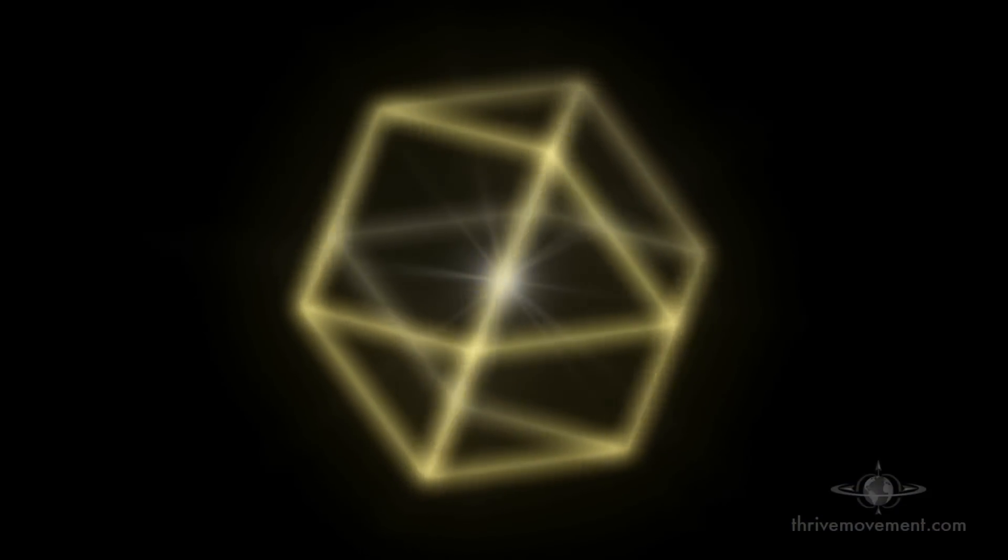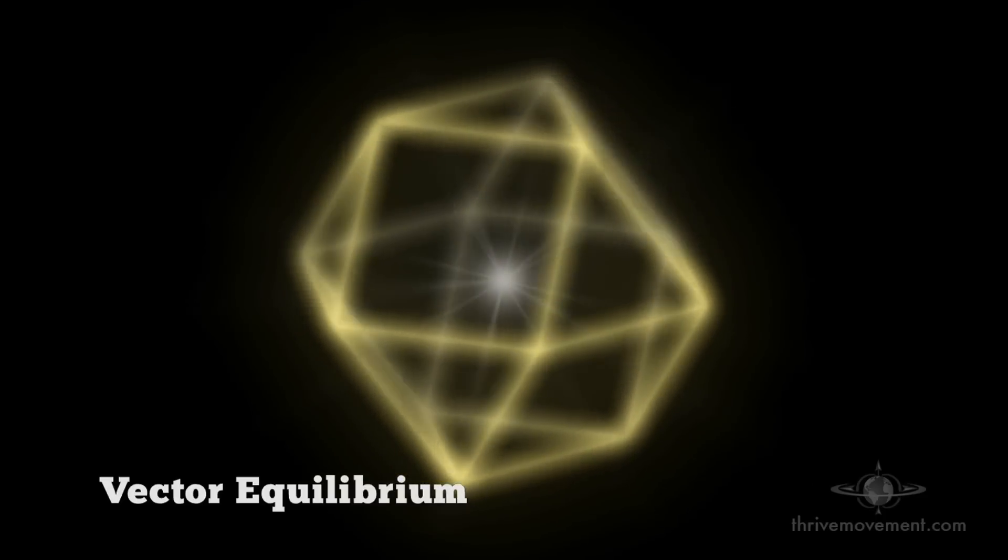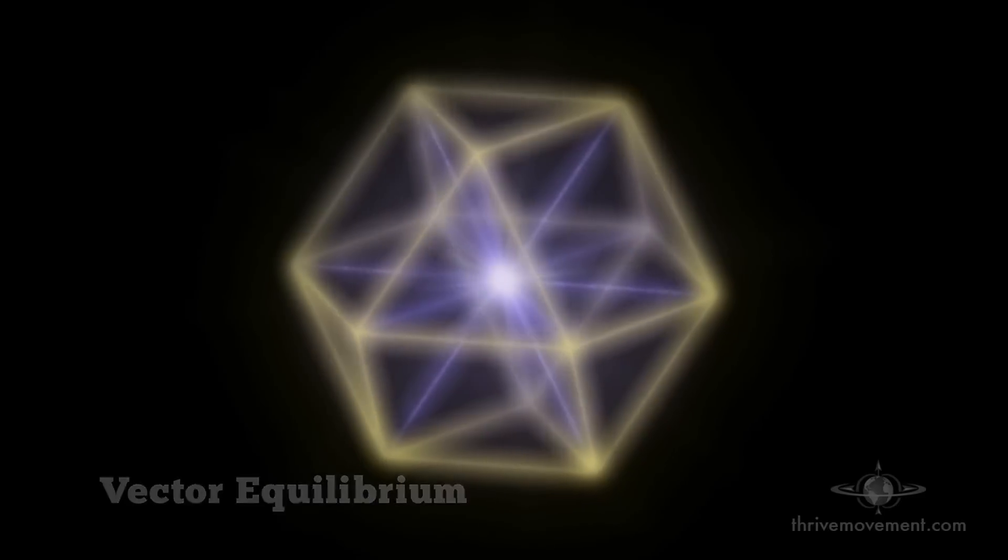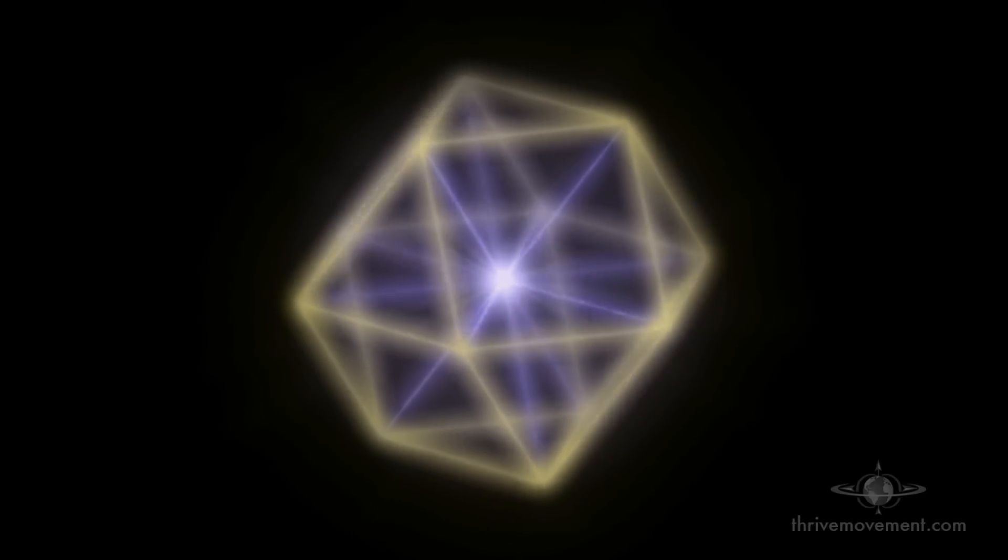His three-dimensional version of the Osirian symbol starts with the vector equilibrium, a perfectly balanced force field with 12 equal energy lines radiating out. They stabilize its center like the 12 spokes of a wheel.